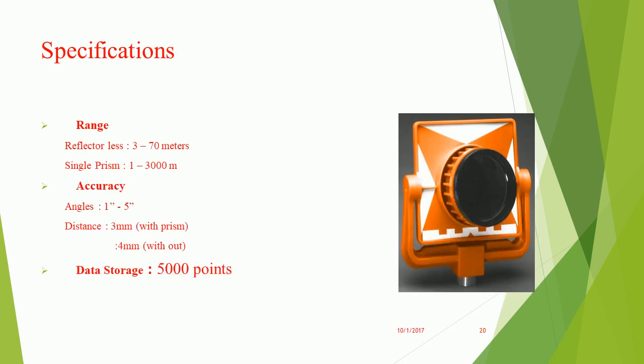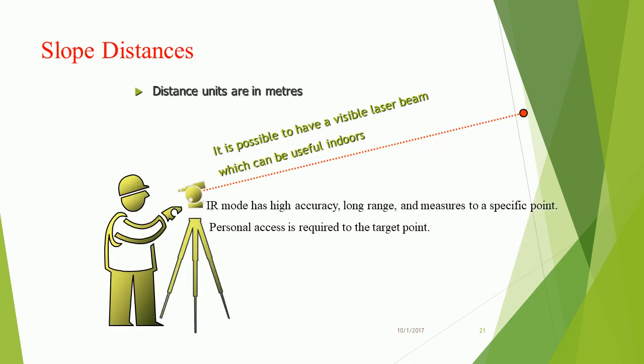Specifications — Range: Reflectorless up to 370 meters; single prism up to 3,000 m. Accuracy: Angles 1–5 arcseconds; distance 3 mm with prism, 4 mm without. Data storage: 5,000 points.